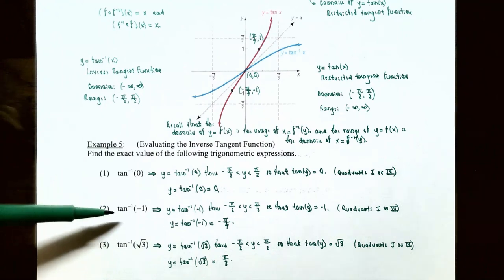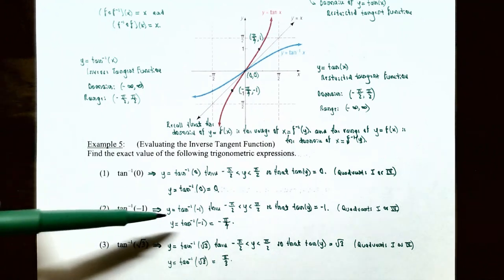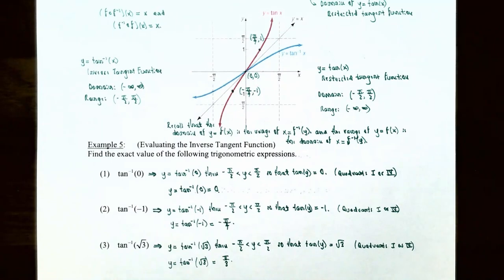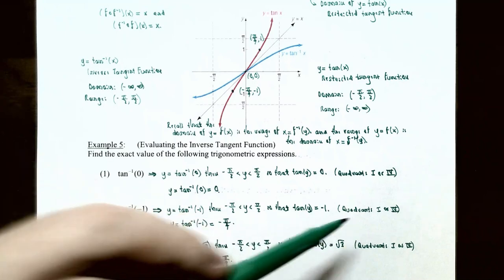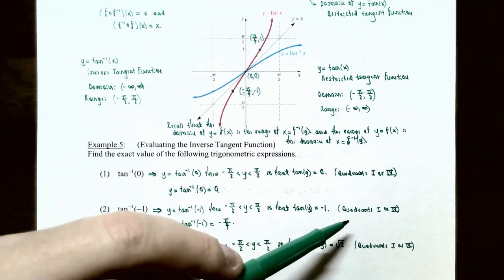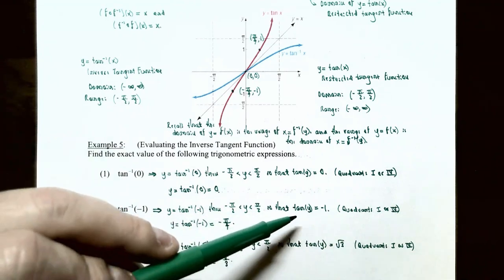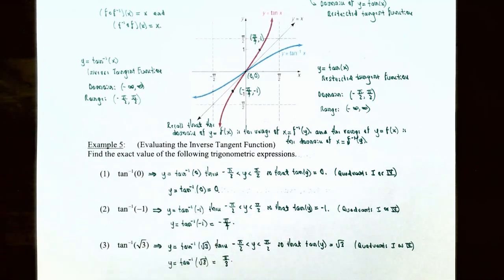Number two: inverse tangent of negative one. Call y equals inverse tangent of negative one. The y value must be between negative pi over 2 and pi over 2, so we're in quadrants one or four, and tangent of y equals negative one — a negative value. Tangent is negative in quadrants two or four, and the only overlap is quadrant four. So we need the angle in quadrant four where tangent equals negative one, which is negative pi over four. Inverse tangent of negative one equals negative pi over four.